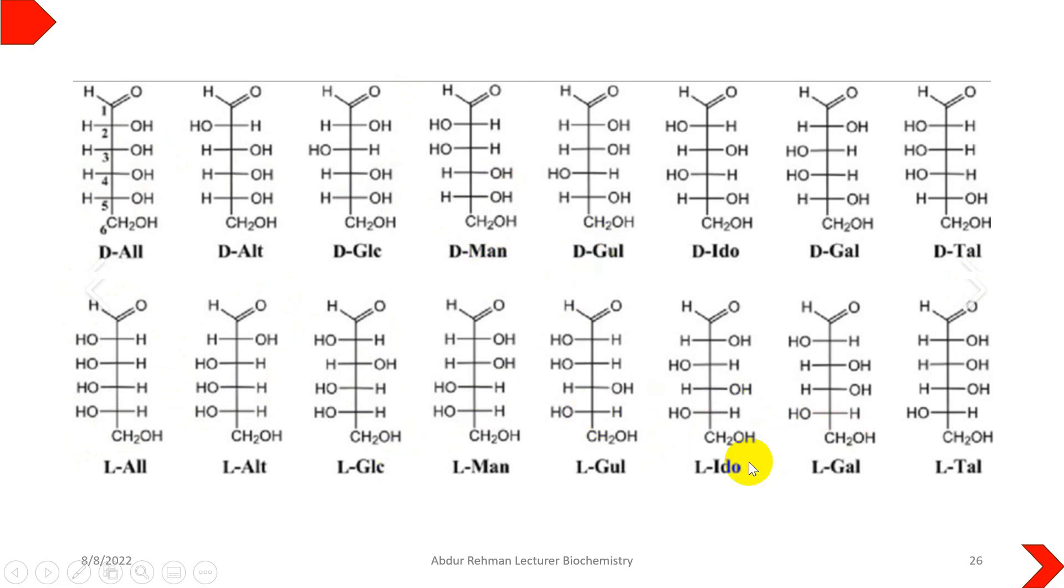One thing to be noted: D monosaccharides are naturally found in mammalian tissues because our cell machinery is specifically built to metabolize D type monosaccharides.